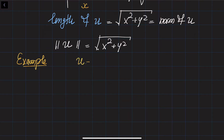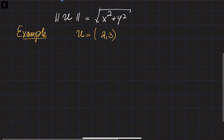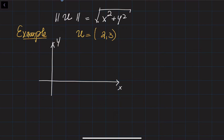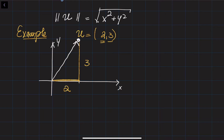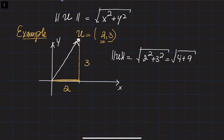Let's say we are given a vector u with the components 2 and 3. In order to find its length, I would like to draw a rectangular coordinate system — so this is x and this is y. We've got this vector with components 2 and 3, and I would like to create the triangle. The height of this triangle is going to be equal to 3, which is the y-coordinate of this vector, and the width is going to be equal to 2, the x-coordinate. So height is 3, width is 2, and then we can find the norm: it equals the square root of 2 squared plus 3 squared, which is the square root of 4 plus 9, which is the square root of 13.